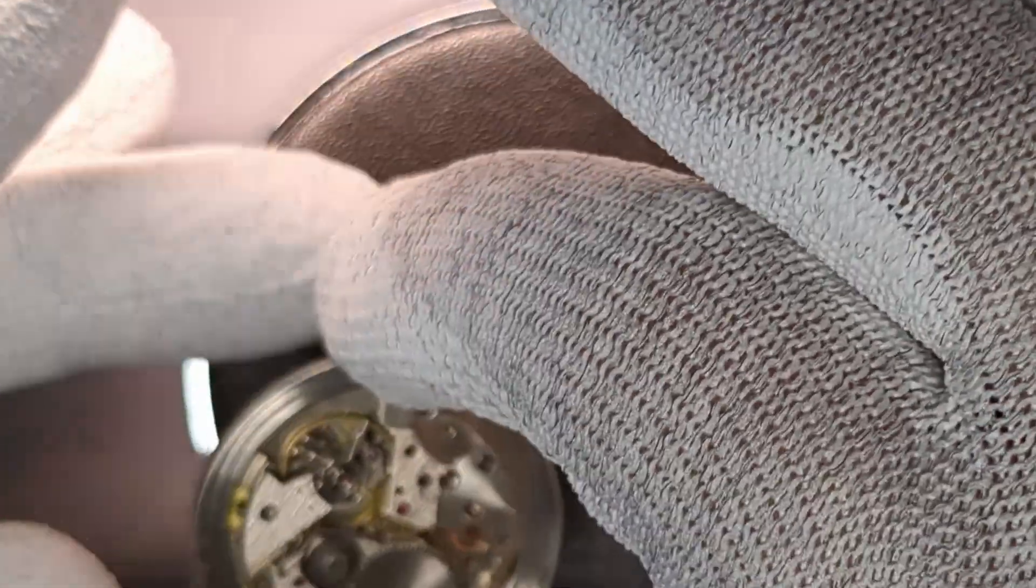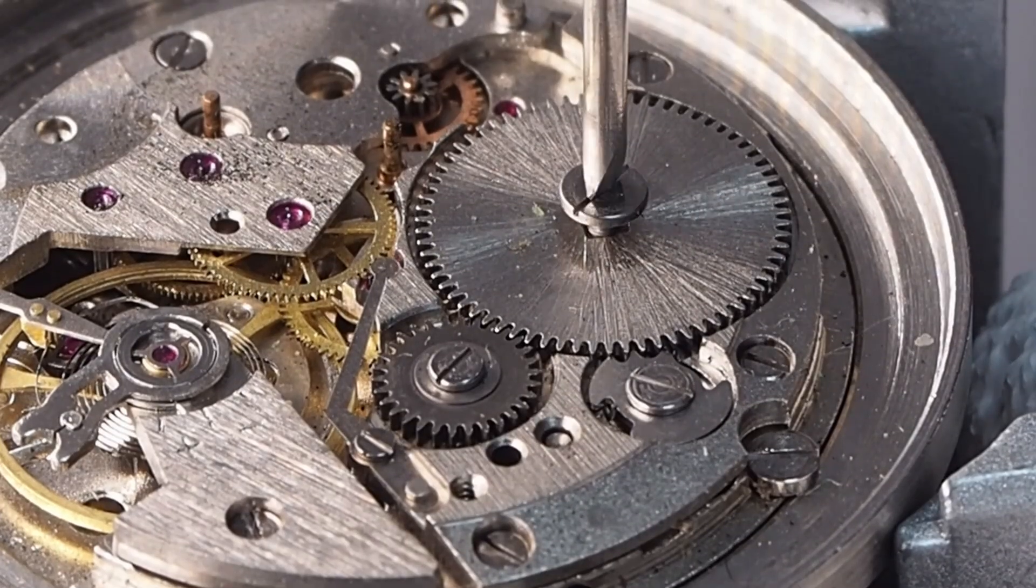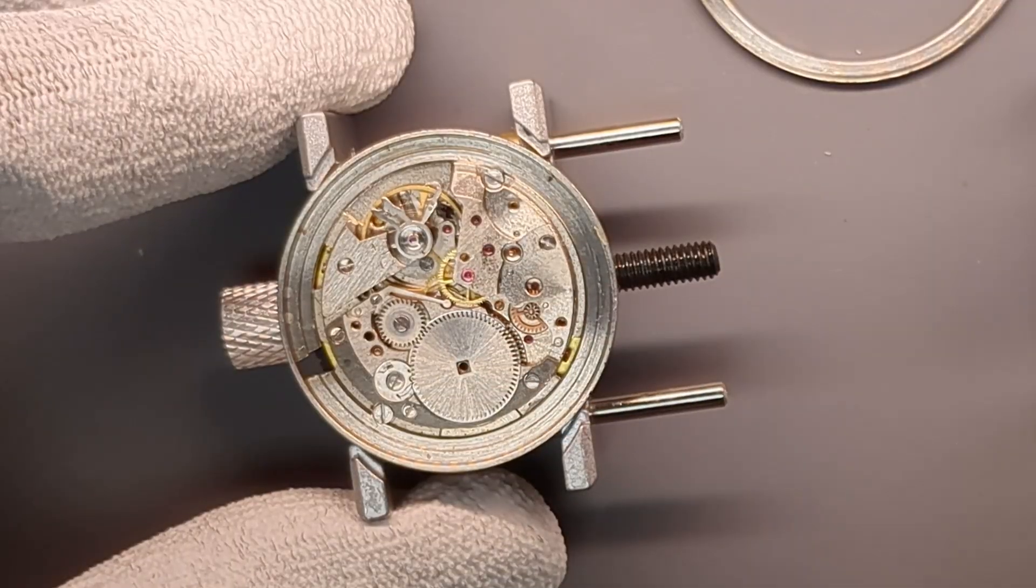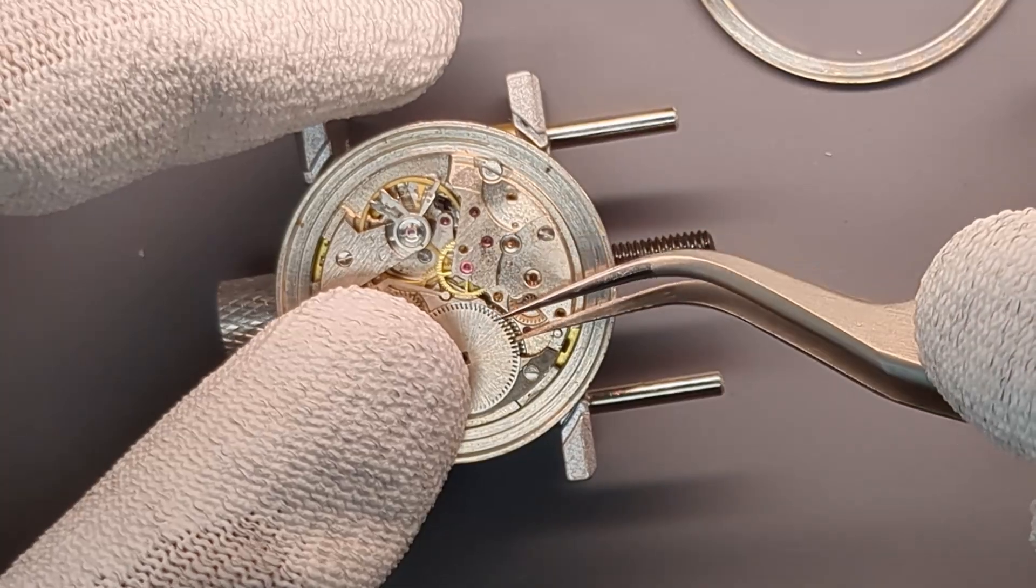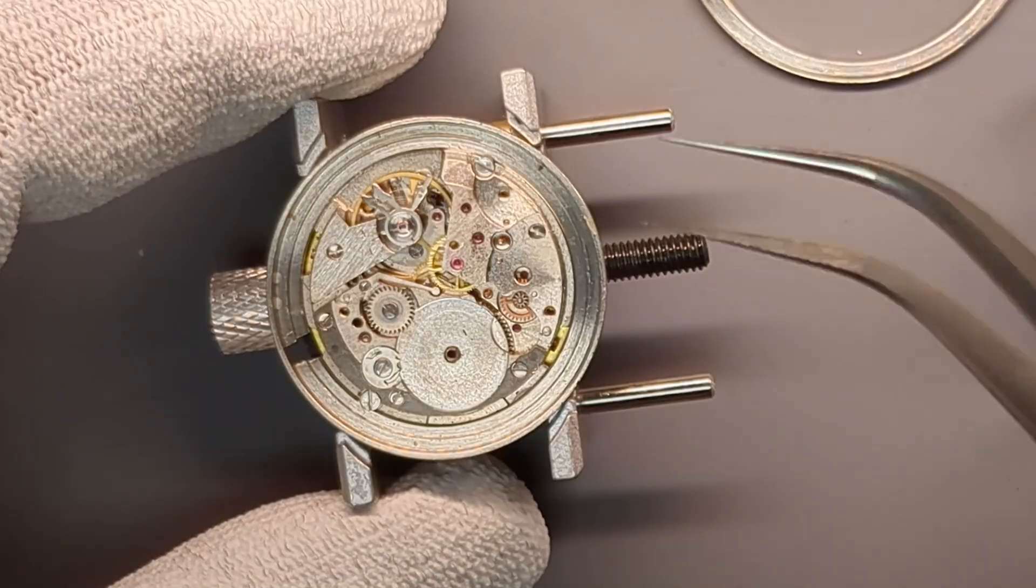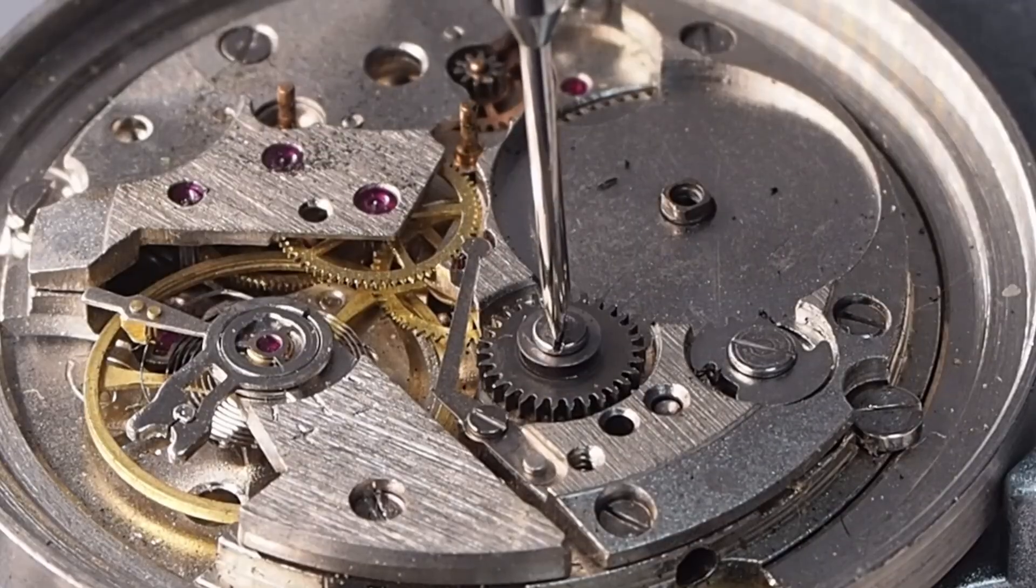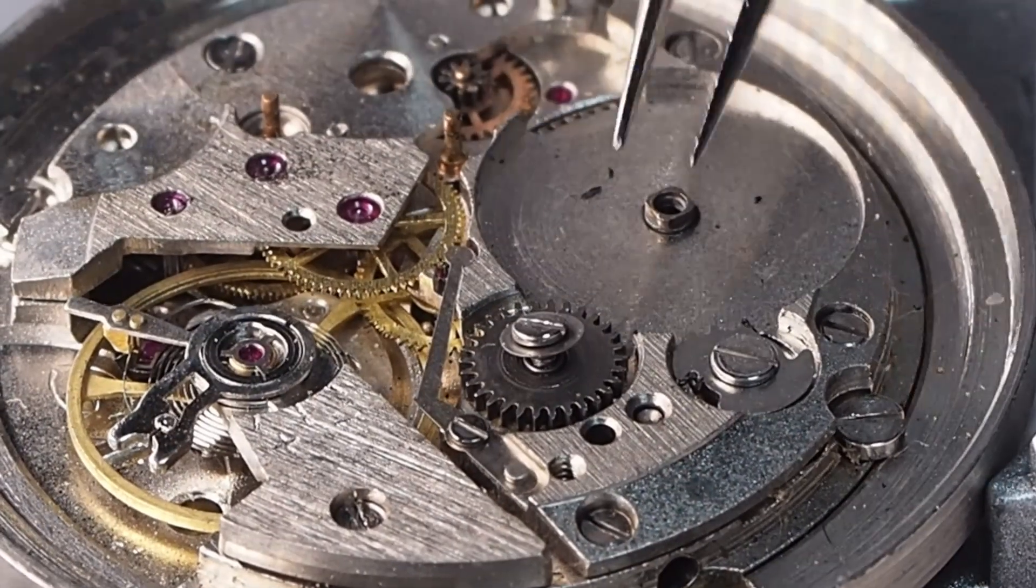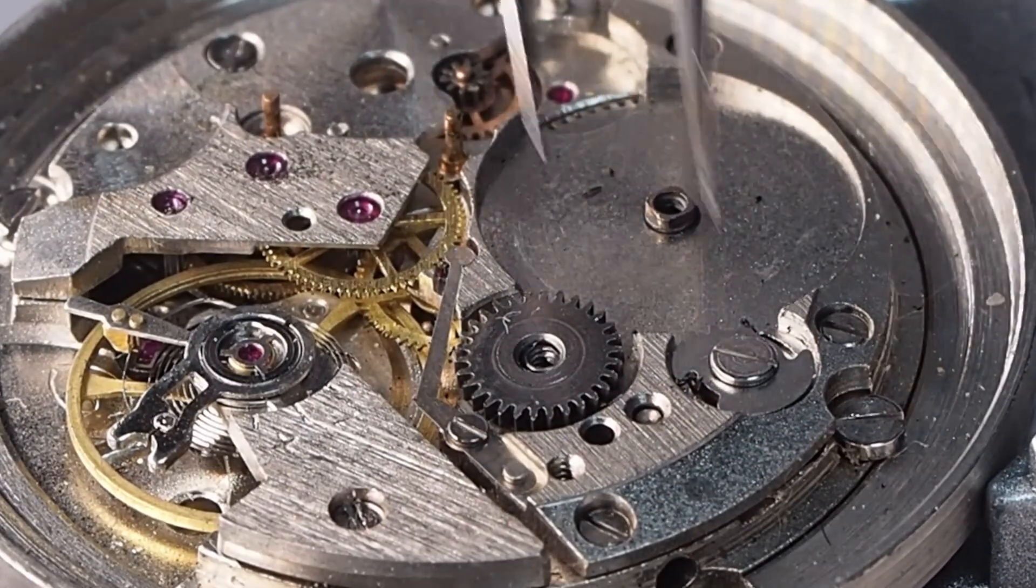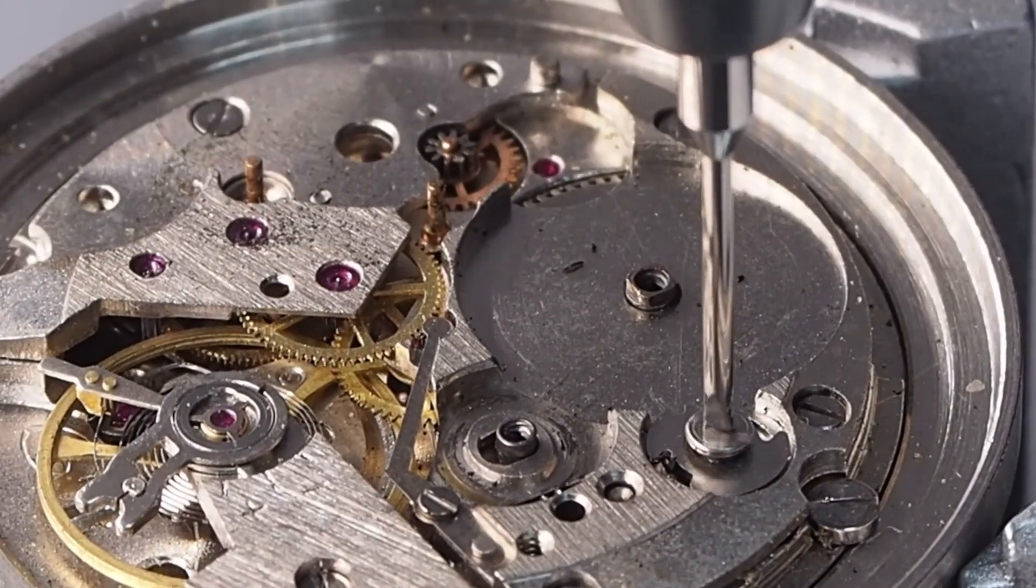The next step is to remove the ratchet wheel, crown wheel and click. Now, the ratchet wheel is out. I'm removing now the crown wheel.